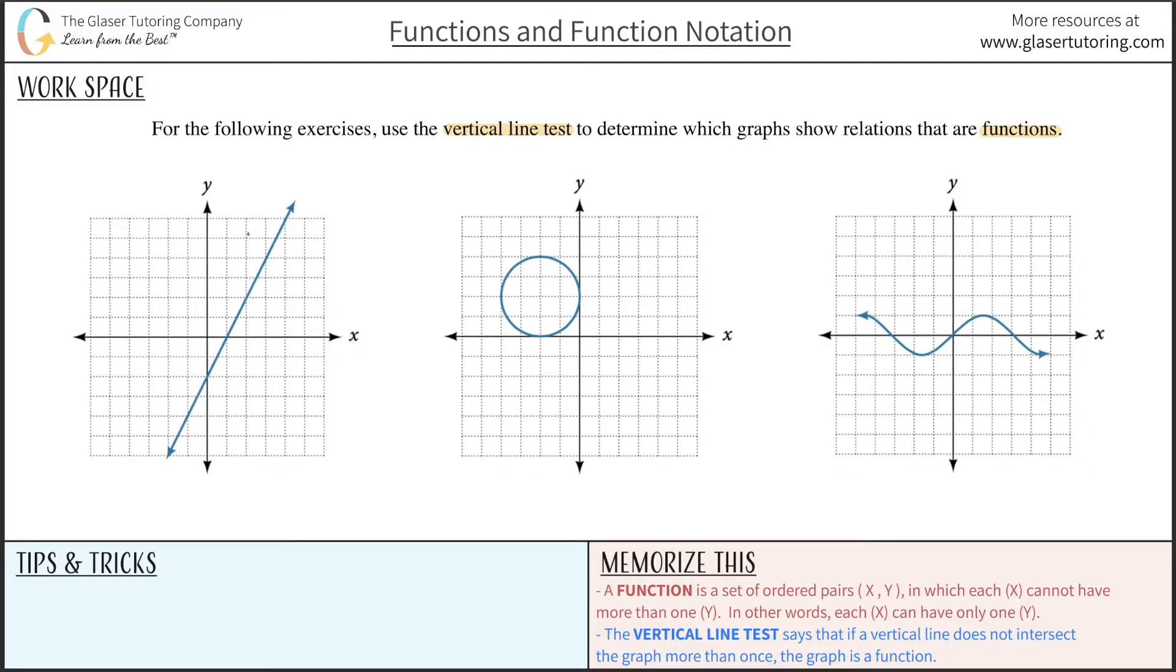Similarly, if I draw another line here, there's only one point of intersection. Therefore, this x value of two has only one corresponding y value of two. So no matter where I draw this vertical line, it only intersects once, never twice, and therefore I can call it a function.